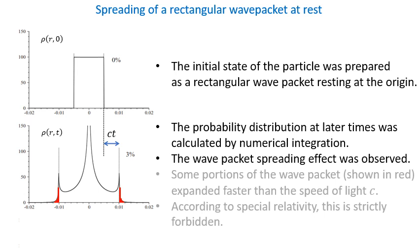Here is an example of the wave packet at some later time. As you see, the wave function has spread out rather rapidly. Remarkably, the red portions of the wave function, which is about 3% of the total probability density, have traveled even faster than the speed of light.